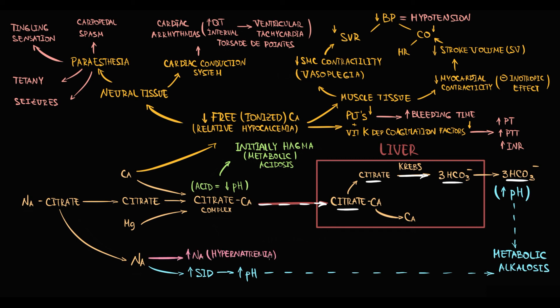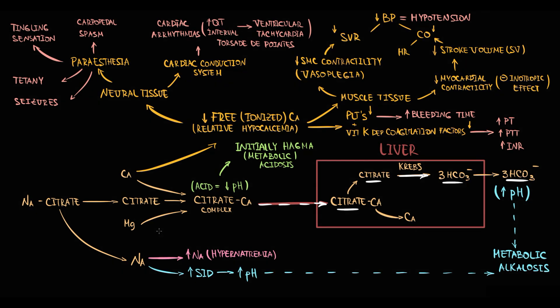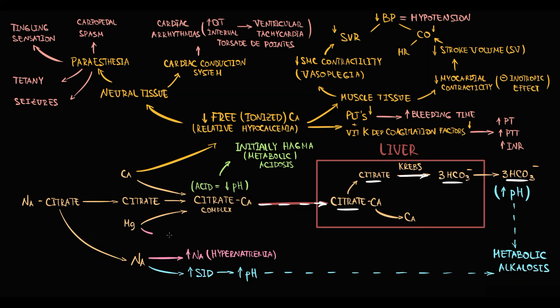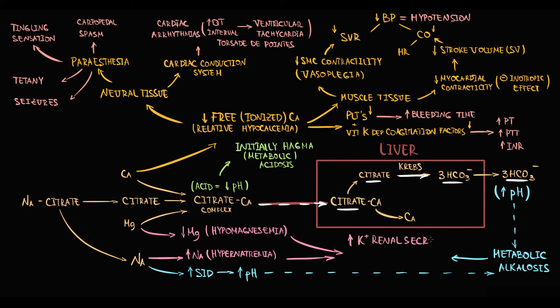Sodium citrate intoxication also causes an increase in blood sodium concentration. Furthermore, because citrate binds not only calcium but also magnesium, citrate-magnesium complexes form, decreasing the amount of free magnesium in the blood. This decrease in magnesium and the metabolic alkalosis together greatly increase potassium renal secretion, resulting in hypokalemia.